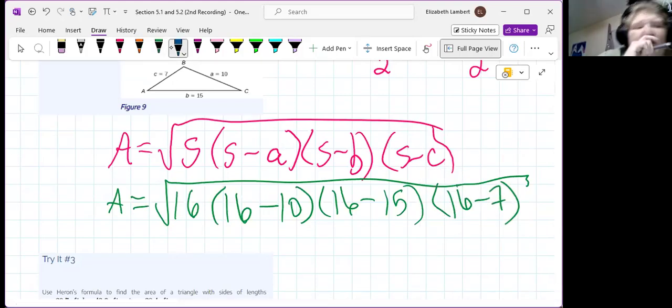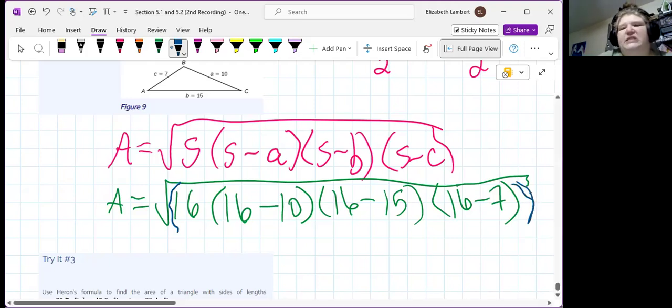I will say for some calculators, if you just type square root of 16 times, it may move the multiplication outside the square root. So, if your calculator doesn't start a parenthesis inside the square root, then I would suggest putting them there just to be extra sure that it does calculate correctly.